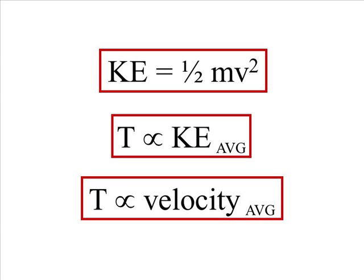Kinetic energy is equivalent to one half mv squared, m being mass, v being velocity of the particle. And the average kinetic energy is directly proportional to temperature, so temperature is directly proportional to the average velocity of particles.